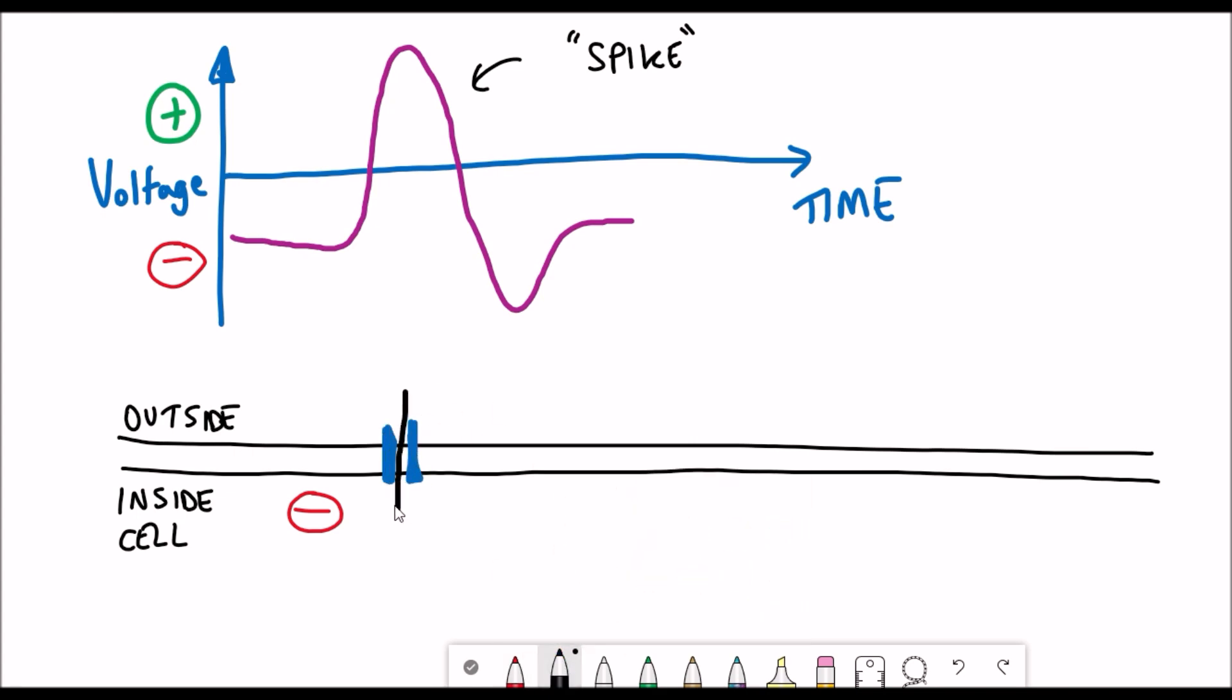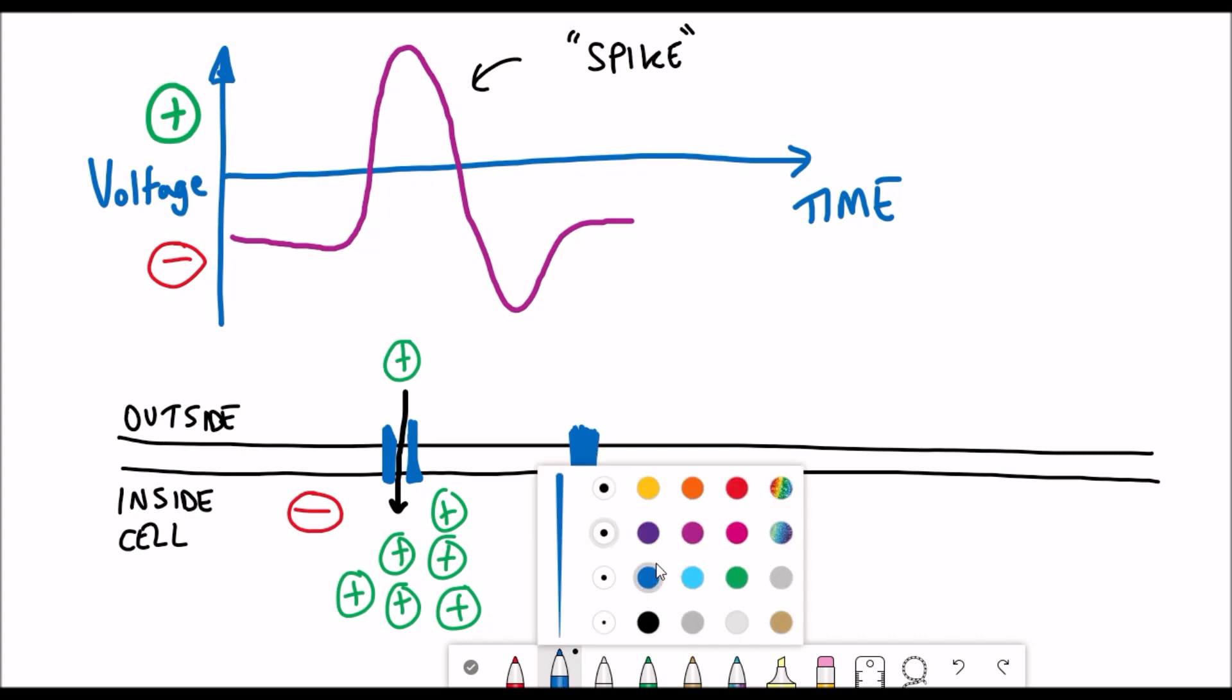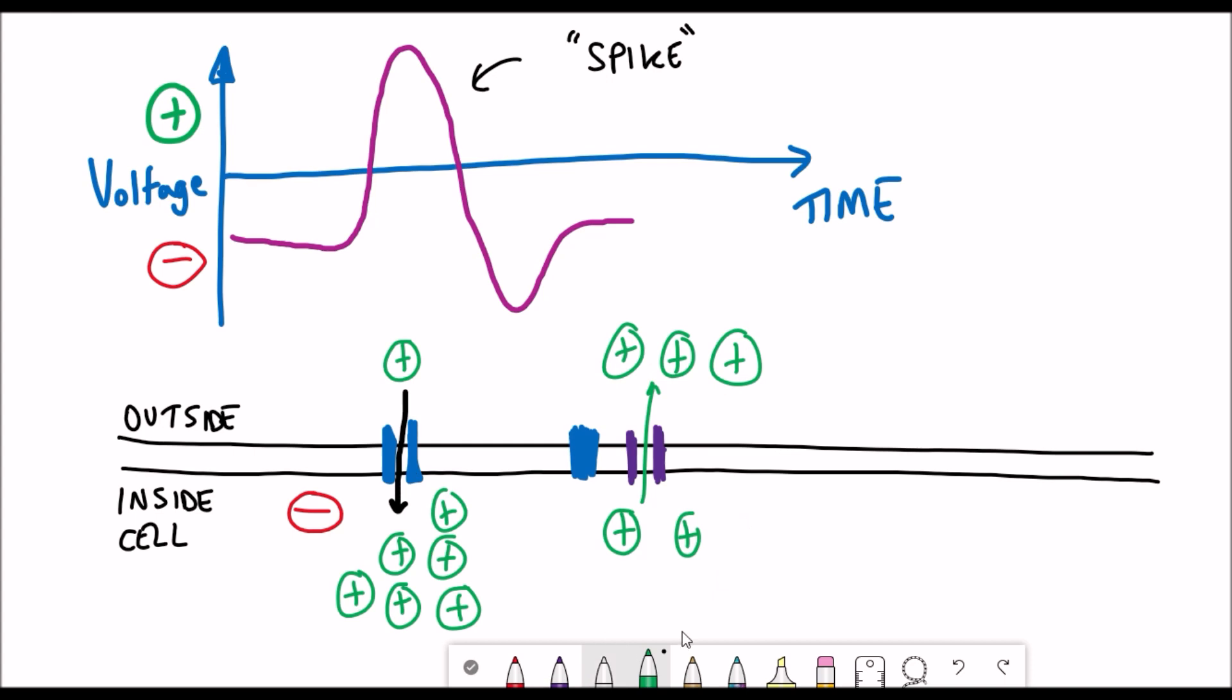When the neuron becomes stimulated you see an increase in positive ions flow into the inside of the neuron and this is what causes the increase in the voltage and then once this increase occurs there's a secondary response to close this channel to prevent any more ions coming in and a different channel opens that allows different positive ions to leave the neuron.